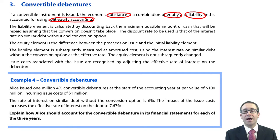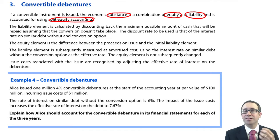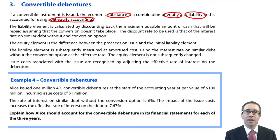The issue is: how do we work out the value of the liability and the value of the equity? That's the challenge, and it involves discounting — that's why it was a challenge at F7 and why it's still a challenge now at P2.